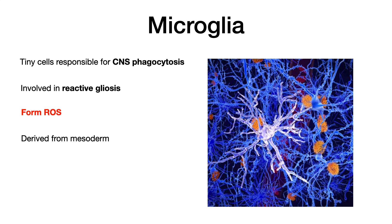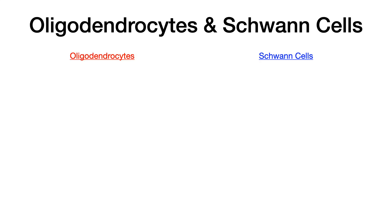One more important point: microglia are derived from the mesoderm. So to recap the two cells so far — astrocytes are the stars of the extracellular environment ('astro' means star), and microglia, with 'micro' meaning small, are essentially the CNS macrophages. Now let's talk about the cells responsible for myelination.